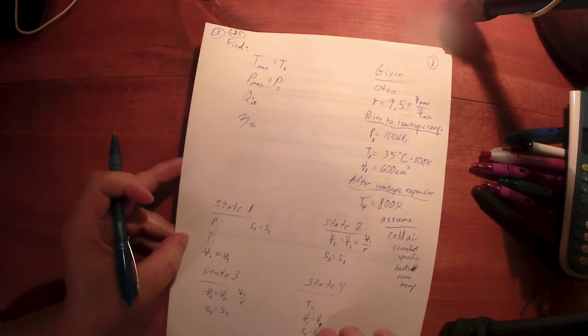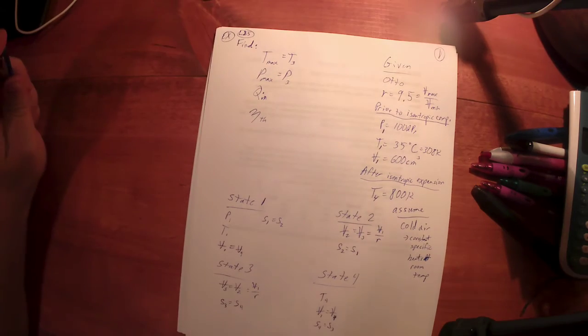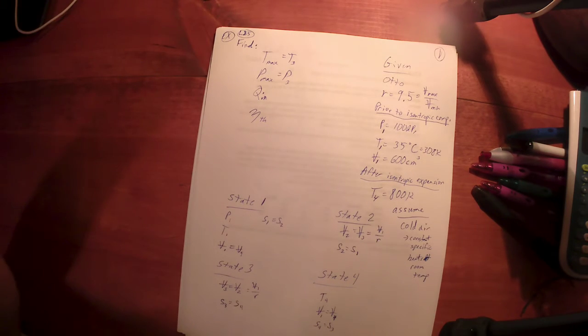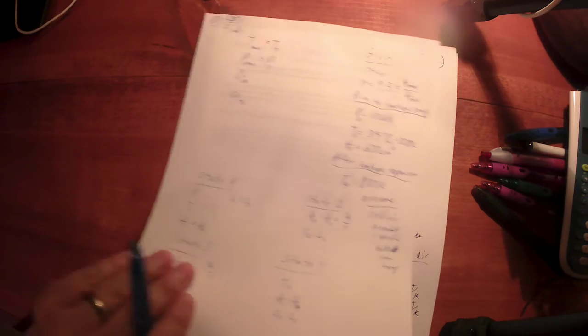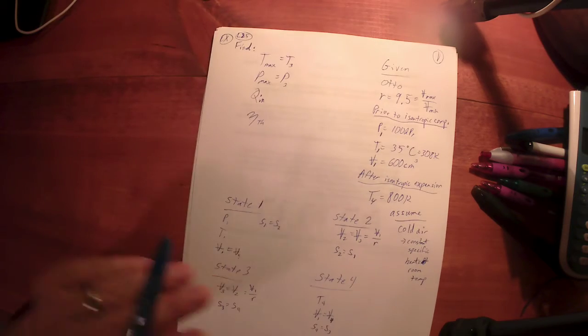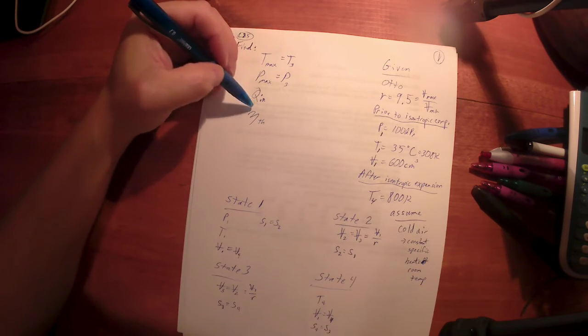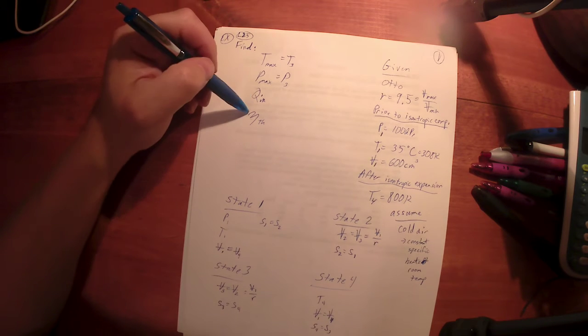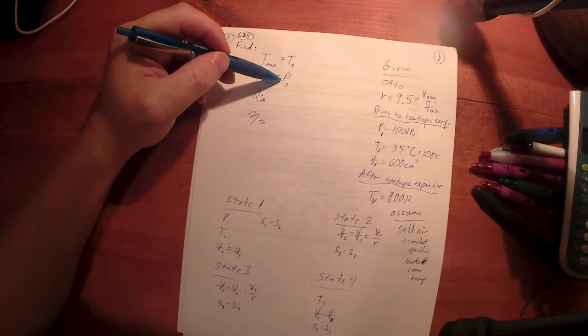That's five pages for one problem. Yes, I do put an Otto cycle problem on the final, but here's what I would point out to you. I've taken a lot of painstaking effort to explain every detail of this and I've shown every single step, and this problem is asking for four different things.